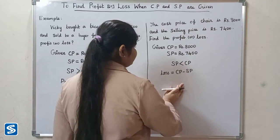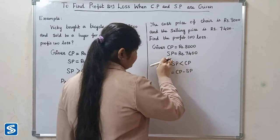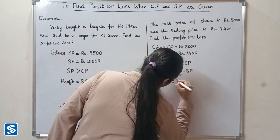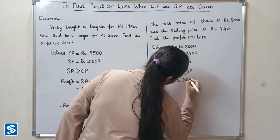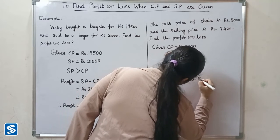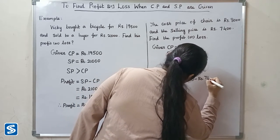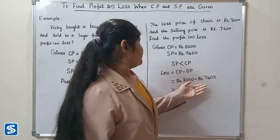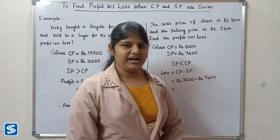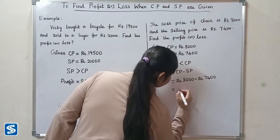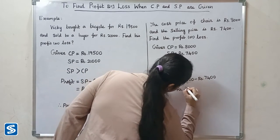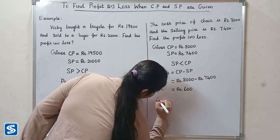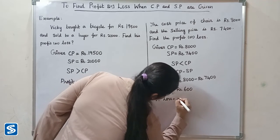Cost price is rupees 8,000 and selling price is rupees 7,400. So loss is equal to rupees 8,000 minus rupees 7,400, which equals rupees 600. Therefore, loss is equal to rupees 600.